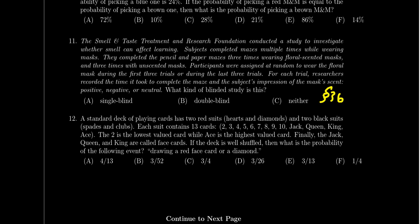Question twelve is the last multiple choice question and is a more challenging probability question than question nine. It employs counting techniques in a probabilistic situation. For example, with a standard deck of cards, what's the probability of drawing certain cards? Counting principles come into play, you apply principles of probability, and calculate the probability of drawing a red card or a diamond — where 'or' involves unions and possibly inclusion-exclusion. Question twelve is a culmination of all the counting and probability principles we've learned.